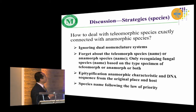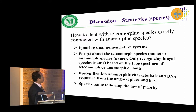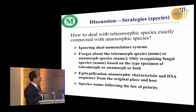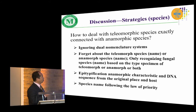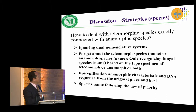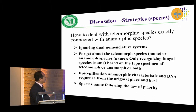We think we should abandon the dual nomenclature system. As I said, the anamorphic stage is just a different stage of the life cycle. So forget about treating telemorph species and anamorph species separately — only recognize fungal species based on the type specimen of the telemorph or anamorph, or both. Then epitypify using the anamorphic characteristics and DNA sequences from the original locality and host of the telemorph. Species names should follow the law of priority.